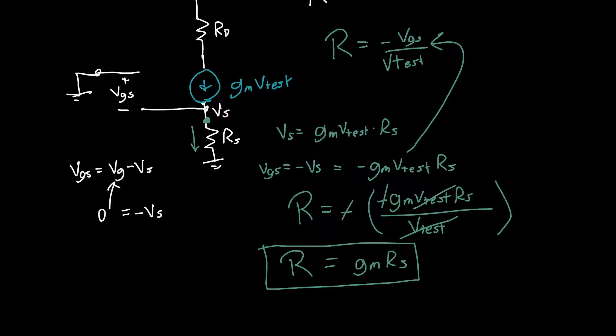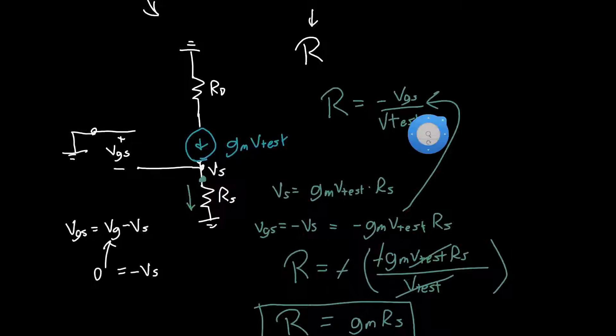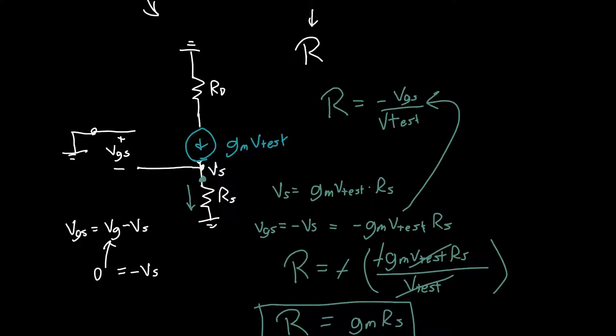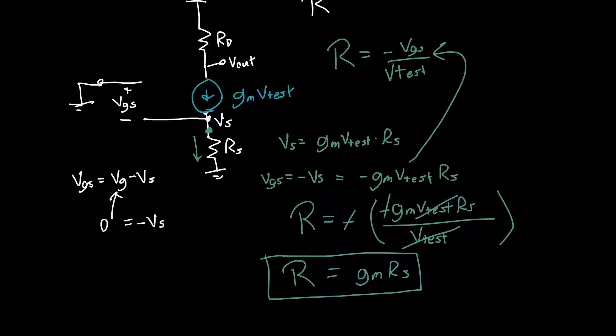Just notice something interesting: it didn't matter where we took the output voltage for the calculation of the return ratio. We could have defined the output voltage as being up here, in which case this would be a common source amplifier, and the return ratio would be exactly the same. The return ratio characterizes the circuit independent of where the output is, which is kind of cool.